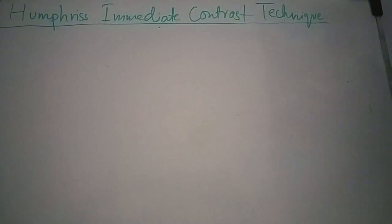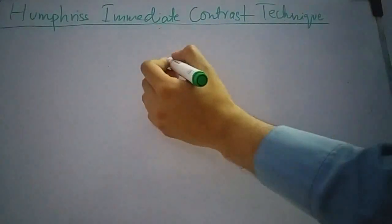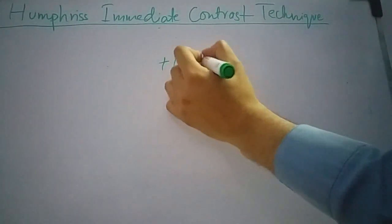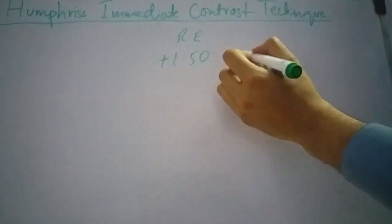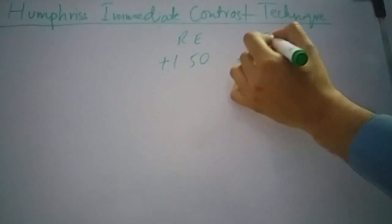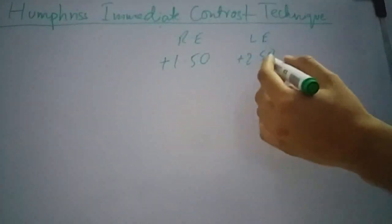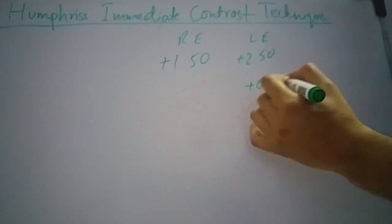Now I will explain this technique with an example. Let's suppose the patient has best corrected visual acuity in the right eye with plus 1.50 lens and with plus 2.50 in the left eye. The first step is to fog the left eye using plus 0.75 or plus 1.